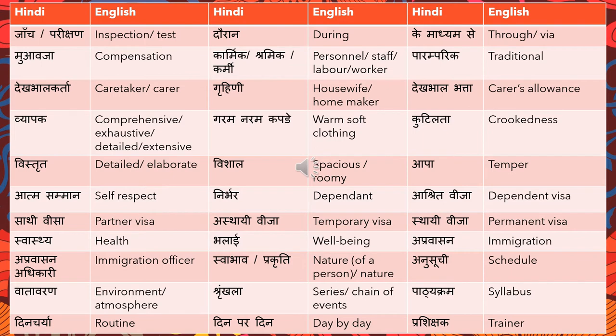Thai visa is temporary visa and sthai visa is permanent visa — these are different types of visa. Swastya means health. Bhalai means well-being. Apravasan means immigration. Apravasan adhikari means immigration officer. Swabhav or prakriti both mean nature — swabhav for the nature of a person, and prakriti for the natural environment or outside surroundings.